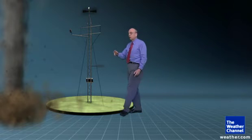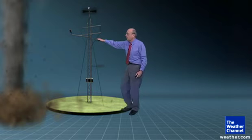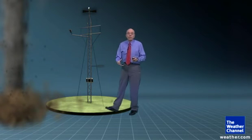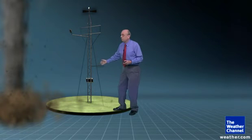It hit what's called a mesonet measurement site of the University of Oklahoma, and it recorded the lowest pressure inside that tornado and also 86 mile per hour winds before the instrument itself was knocked down.